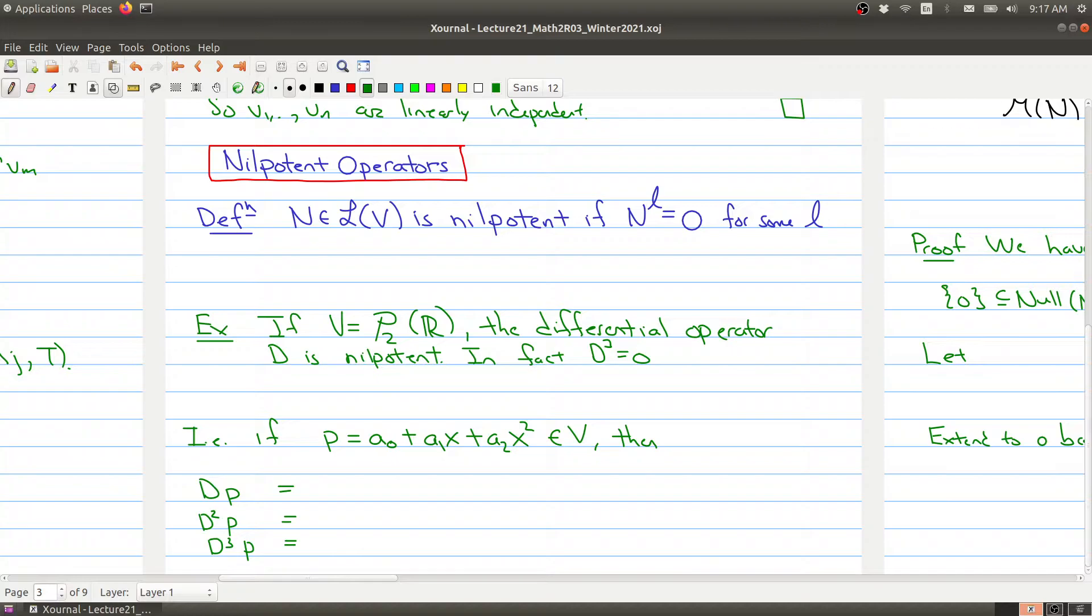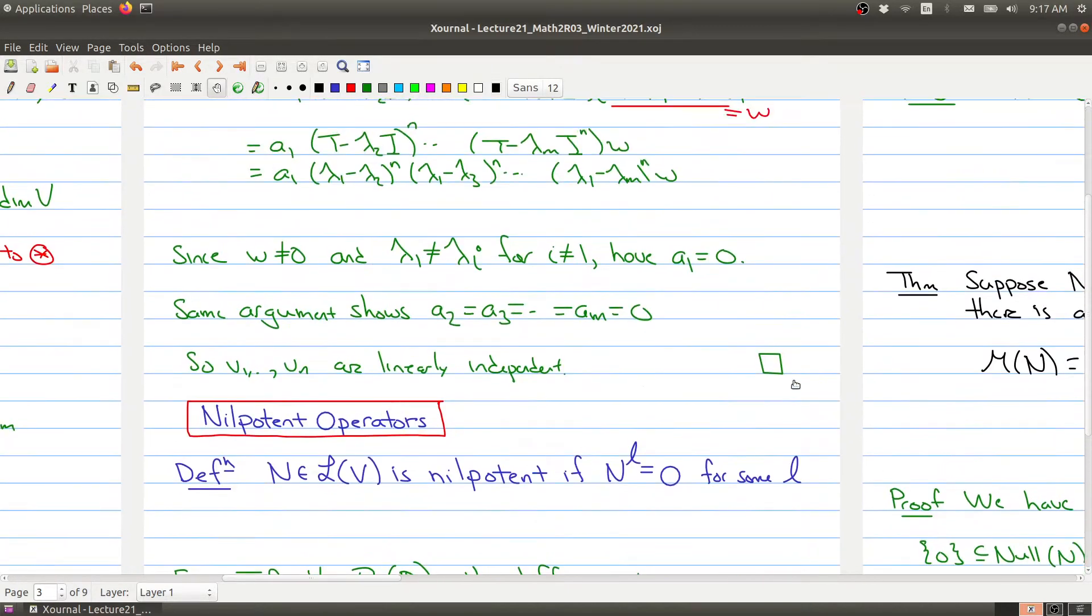So let's be a little bit more explicit. Let's say I take any polynomial of degree 2, so a0 plus a1x plus a2x squared. Then when I take the derivative of this I get a1 plus 2a2x. If I apply D twice, I get 2a2. And then if I apply the differential operator three times to p, I get 0. So the differential operator is a good example to think of as a nilpotent operator.